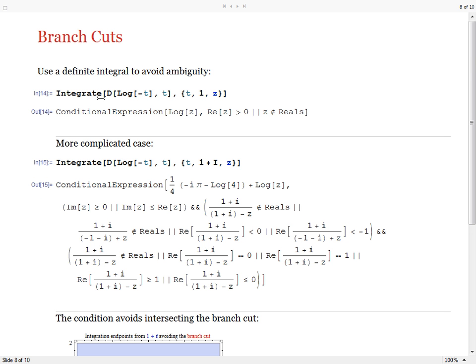If you specify an integral with definite lower and upper bounds, then you avoid this ambiguity. In this case the condition in the second argument of conditional expression expresses the requirement that the integration endpoint should not intersect with the branch cut running from minus infinity to zero for the function log of z.